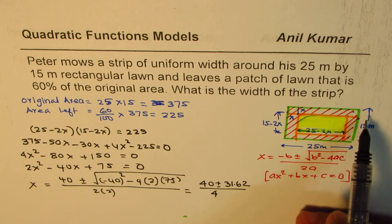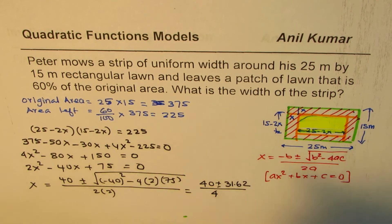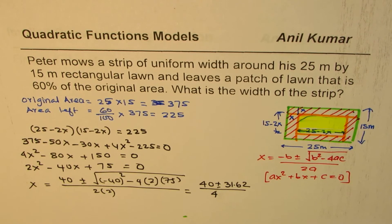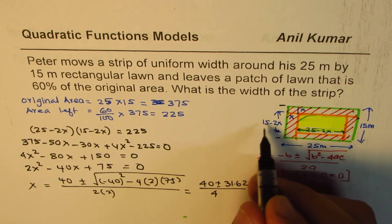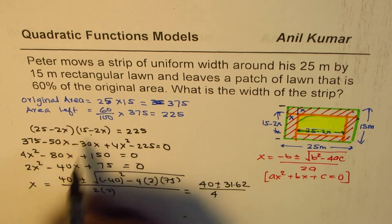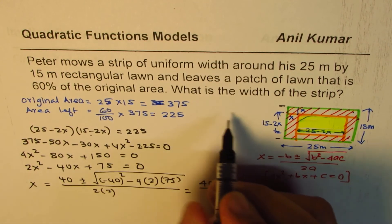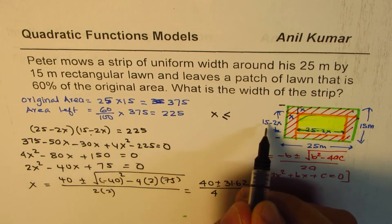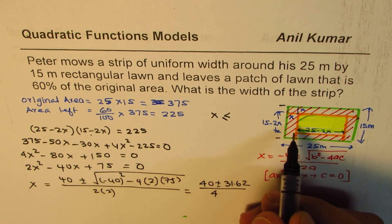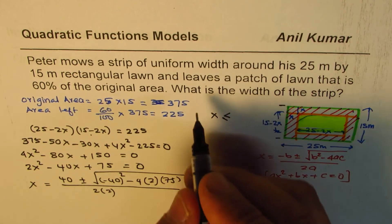Let's write down that since the width is 15 meters, this cannot be negative. So x has to be less than or equal to... 15 minus 2x should be greater than or equal to zero, it cannot be negative.